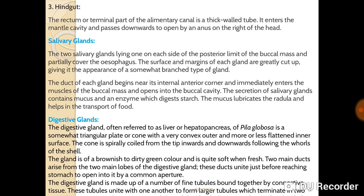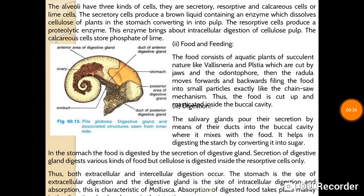Two main ducts arise from the main lobe of the digestive gland. These ducts unite just before reaching the stomach and open into it by a common aperture. The digestive gland is made up of a number of fine tubules bound together by connective tissue. These tubules unite with one another to form larger tubules which terminate into the two main ducts corresponding to the main lobe of the gland.